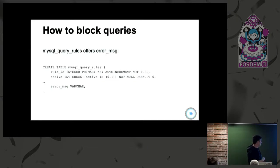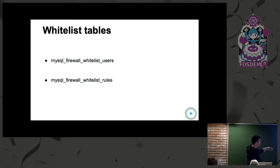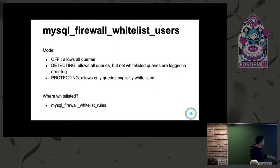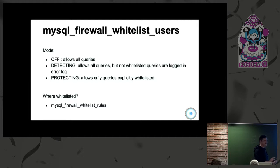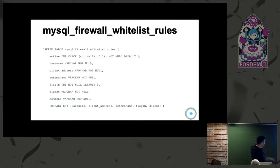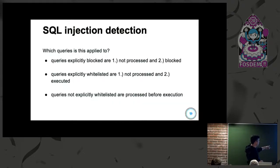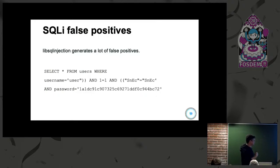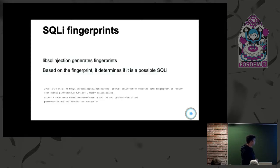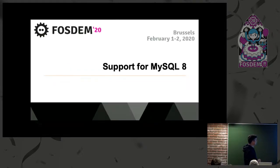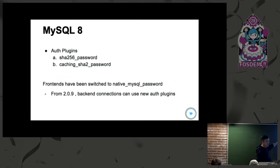We've introduced a firewall using a whitelist approach. Previously you'd use a query rule to block users; now you can specify either users or schemas in a whitelist and set it in one of three modes: off, detecting (to track traffic), or protecting. Think of it like SELinux for ProxySQL. Traffic statistics are kept for all requests. We've also added a SQL injection detection library. It does work but gives a lot of false positives because it's very strict. When enabled, you'll see messages in your error log about dangerous statements being executed. We also now have full support for MySQL 8 authentication mechanisms.